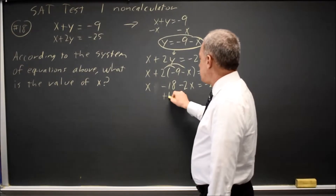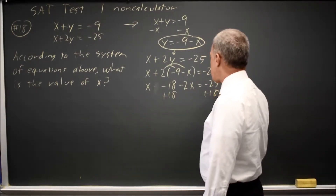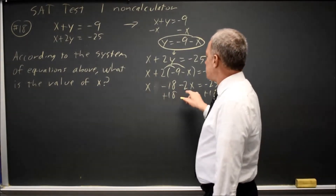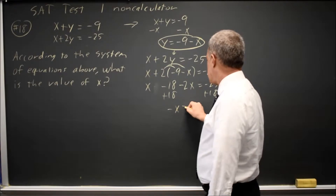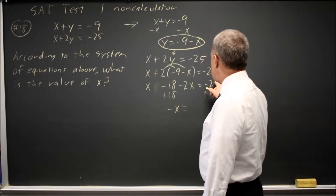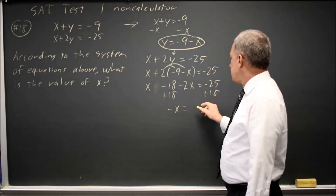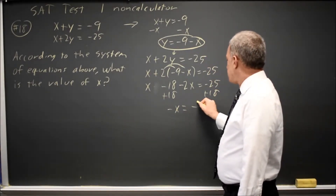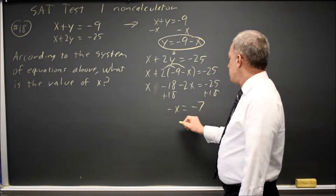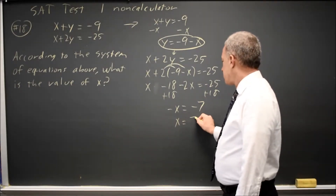Let's add 18 to both sides. x minus 2x is negative x. Negative 25 plus 18 is negative 7. So x equals positive 7.